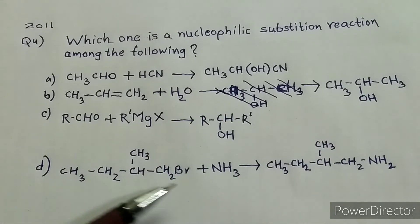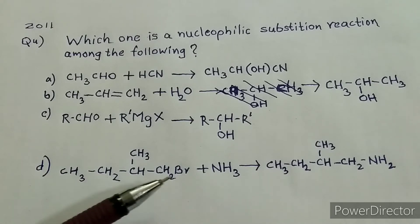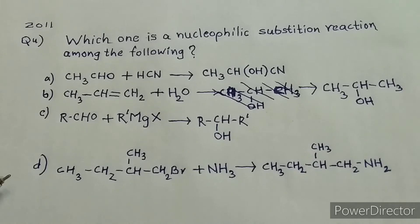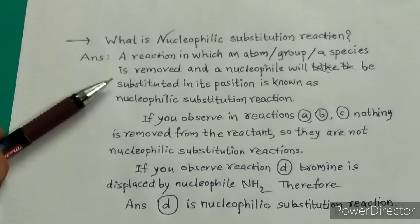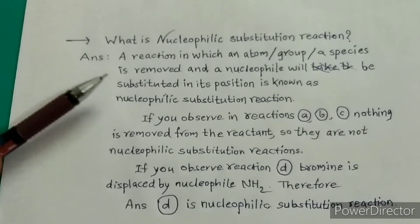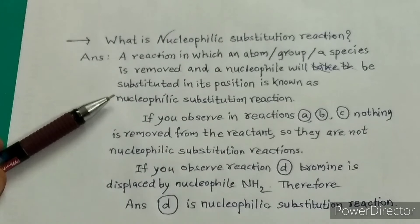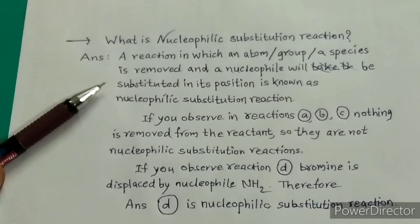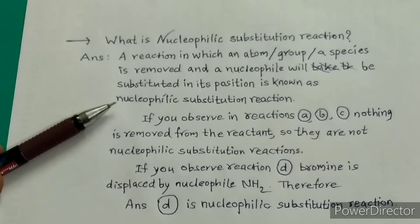Because the bromine atom is substituted by another group — NH2 — which is a nucleophile, this is a nucleophilic substitution reaction. Therefore, the answer for this question is option D. For theoretical explanation: a reaction in which an atom or group is removed and a nucleophile is substituted in its position is known as a nucleophilic substitution reaction.